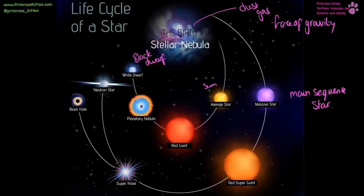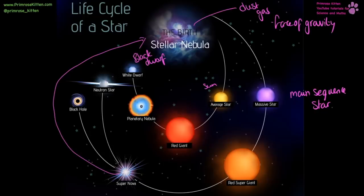Our Sun is a second-generation star because after a red supergiant undergoes supernova, what remains is a cloud of dust and gas that can come together again to form a new star. We know this because the Sun has heavy elements — things like iron are present in the centre of the star. Since we were created from this cloud of dust and gas which also formed the Earth, you literally used to be a star. You are made of stardust.